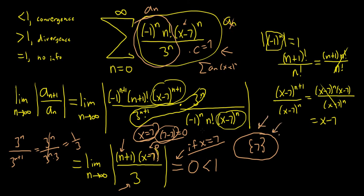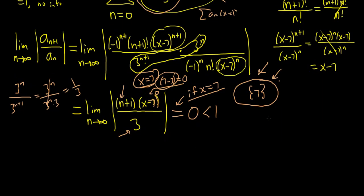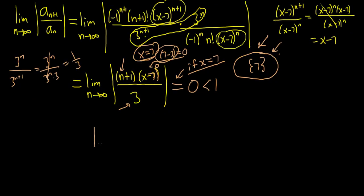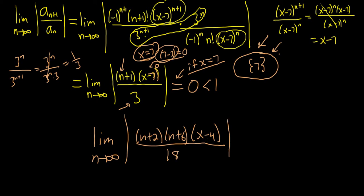So pretty nice problem. Just to give you another quick example, say you work out a problem and you get something like limit n goes to infinity, n plus 2 over n plus 6, x minus 4 over 18. So you get this. Same thing here, right? This is going to be infinity, this piece here. And the only way this is equal to 0 is if x is 4.